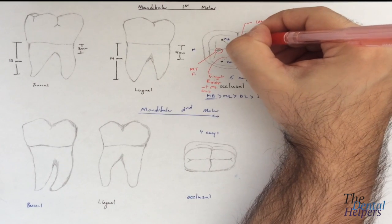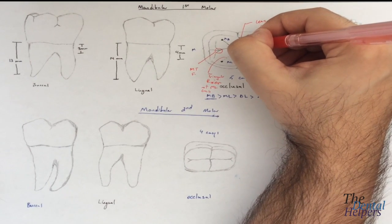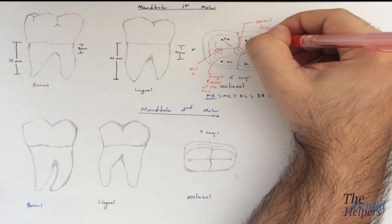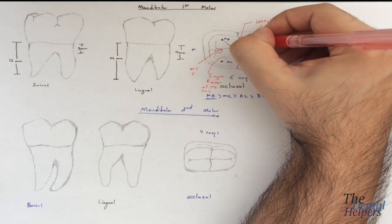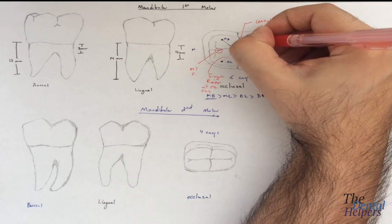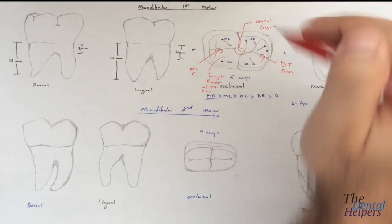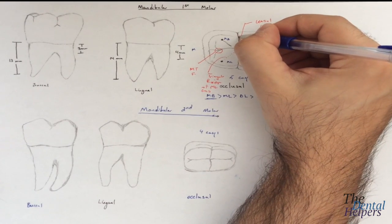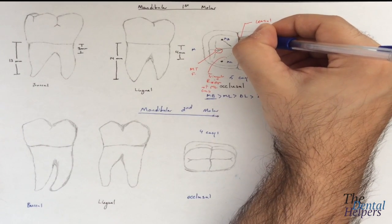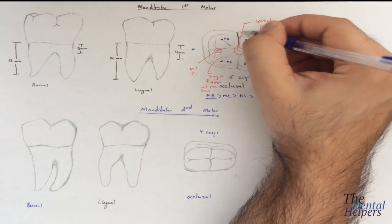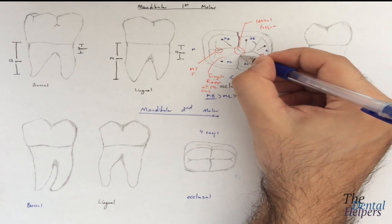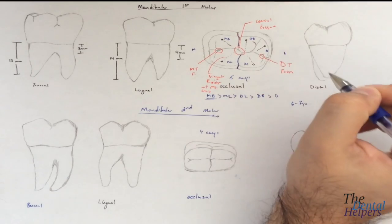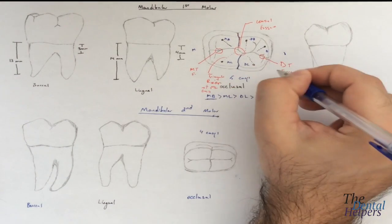This groove right here is the mesial buccal groove — it's separating the mesial buccal cusp from the distal buccal cusp. The mesial buccal groove is actually going to extend down the buccal surface, so it's actually going to go like this and extend into the buccal surface. Same thing is going to happen with the lingual groove — the lingual groove is going to come down and go down the lingual surface of the tooth.